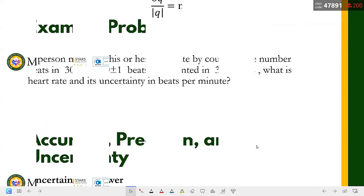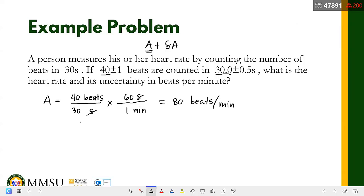So in this case, delta A over the absolute value of A, so that's 80, is equal to... ang measurement natin ay dalawa pala, no? Dalawa. So itong beats tsaka itong seconds.